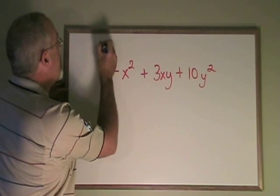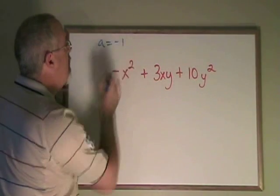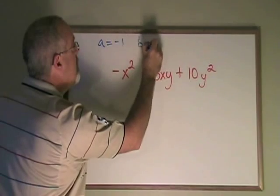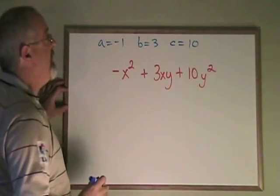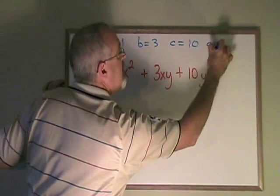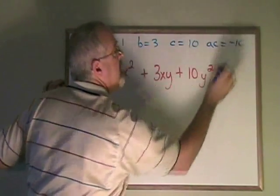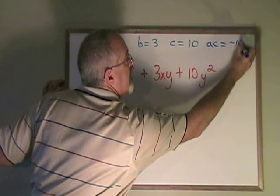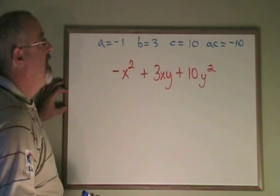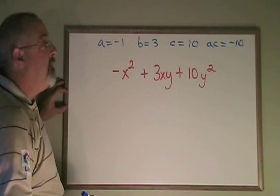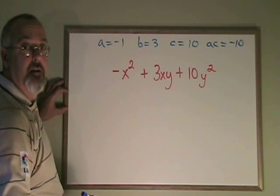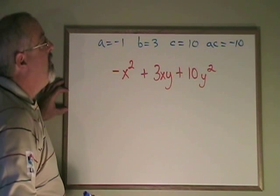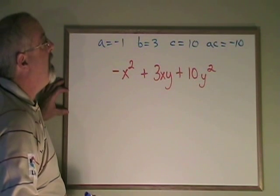Our a is negative 1. Our b is 3. Our c is 10. And our ac is going to be negative 1 times 10, which means our ac is negative 10. What two numbers multiply to give negative 10, the ac, and add to give 3, the b? The two numbers are going to be 5 and negative 2.